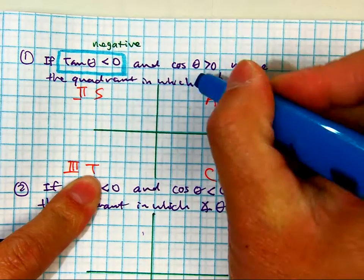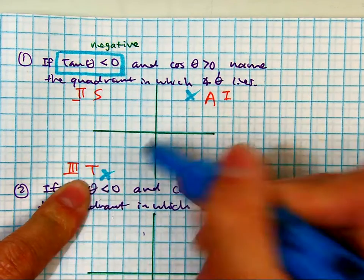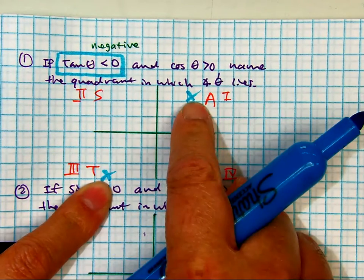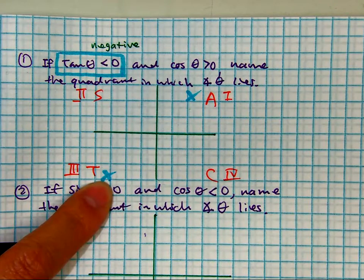So I'm going to put an x here because that's where it's positive. And we're looking for what, class? Negative. So Tatiana, negative will be in which two quadrants?